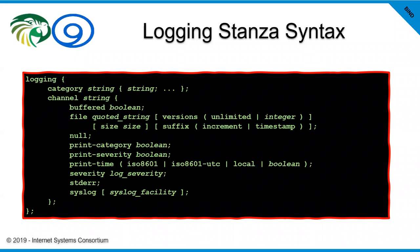The 'versions' statement says how many additional copies of this log file to keep around. If you say 'versions 5', it keeps the current log file plus versions .0, .1, .2, .3, and .4. The 'size' statement takes a size — for example, '1M' for one megabyte or '100K' for 100 kilobytes. When the currently outputted file reaches this size, a new output file is created. The previous file is bumped to .0, all others are bumped up a version, and the topmost — if you've reached your versions limit — is discarded.